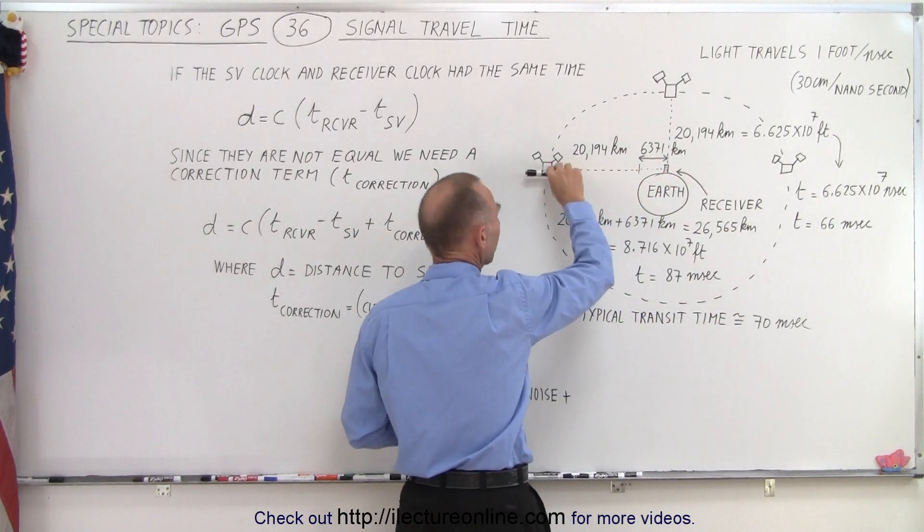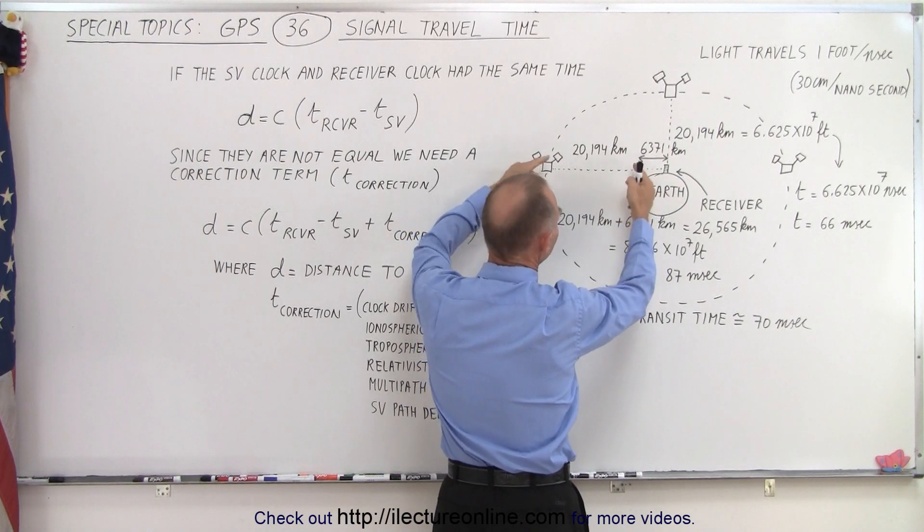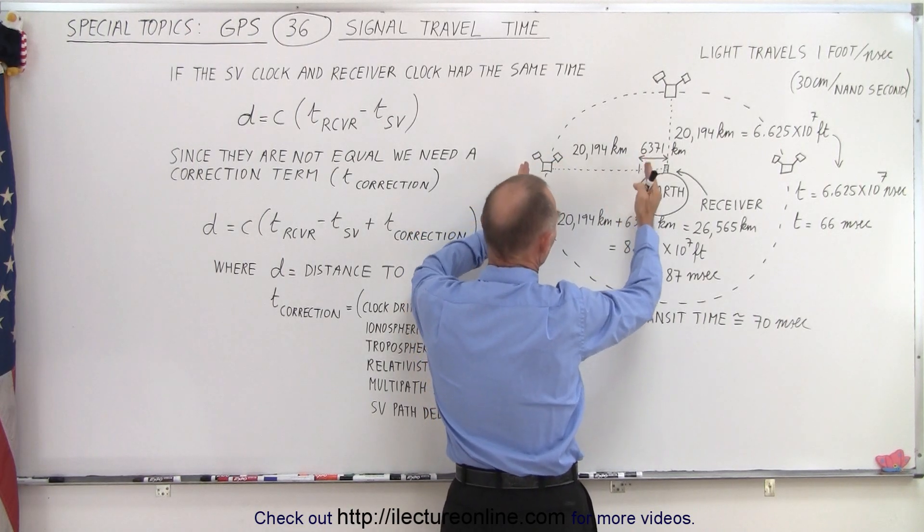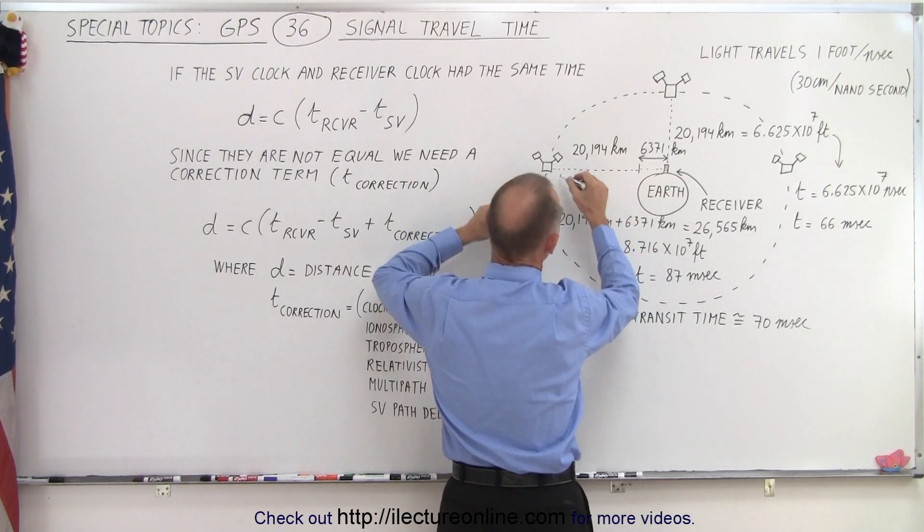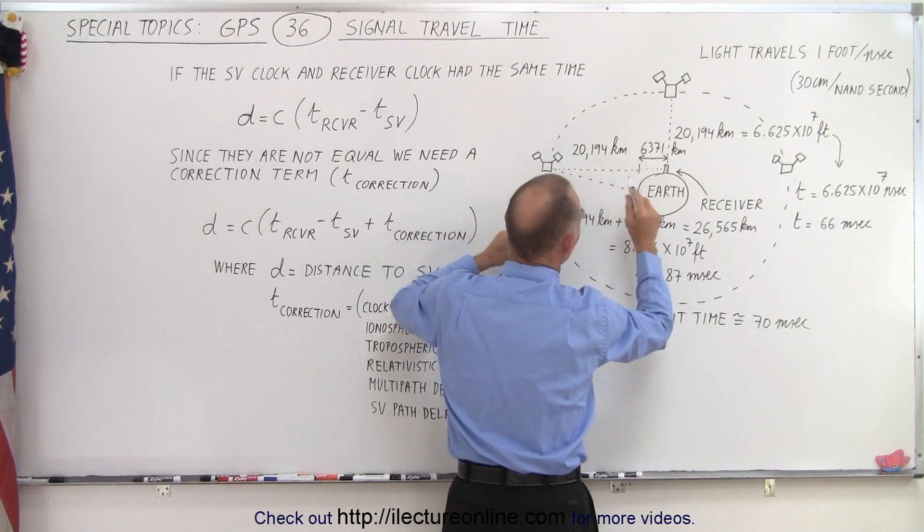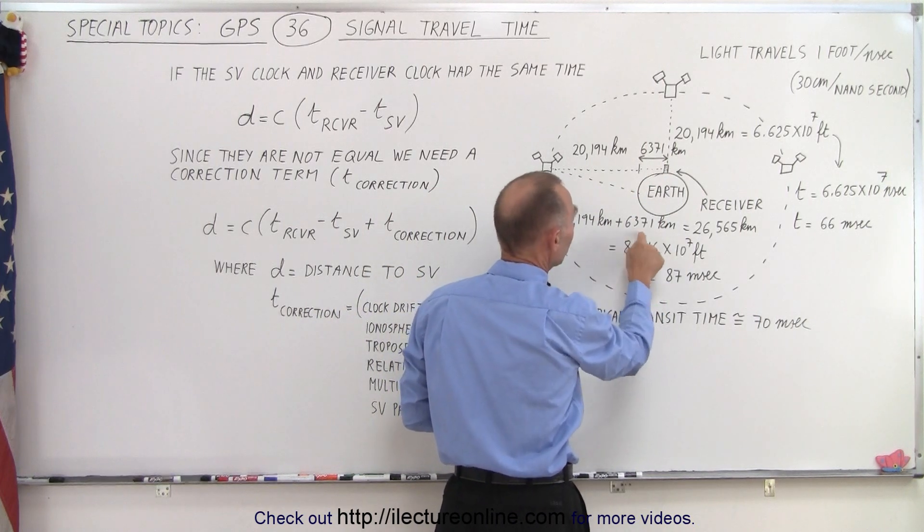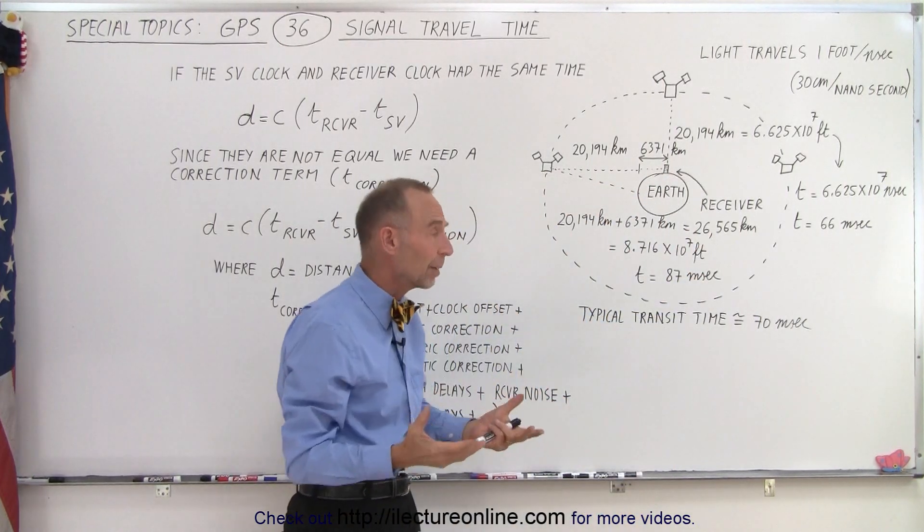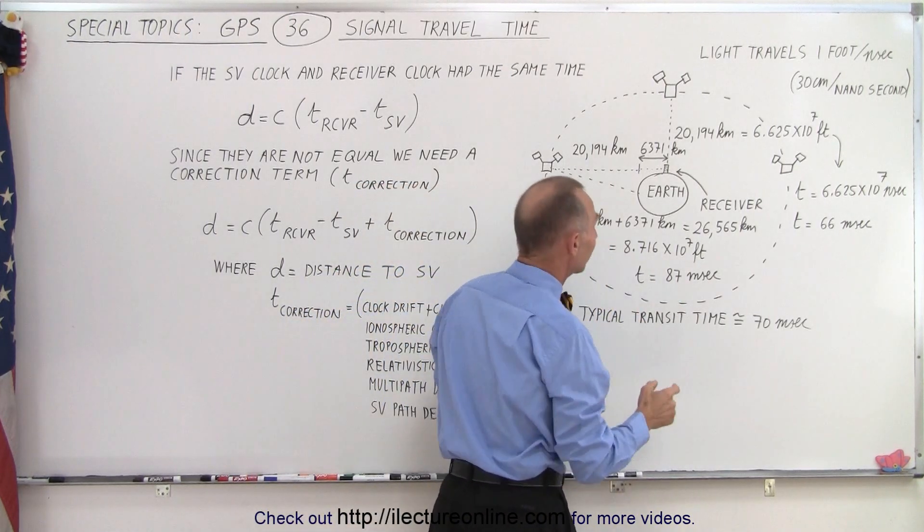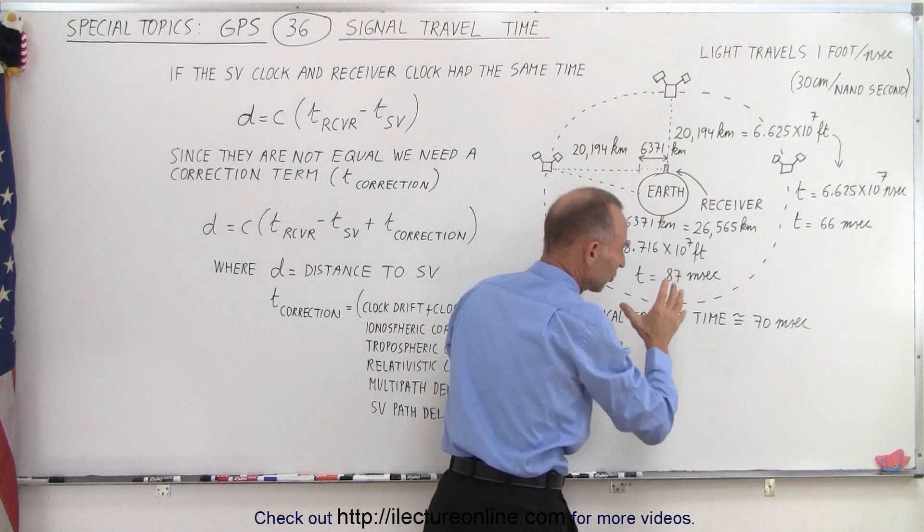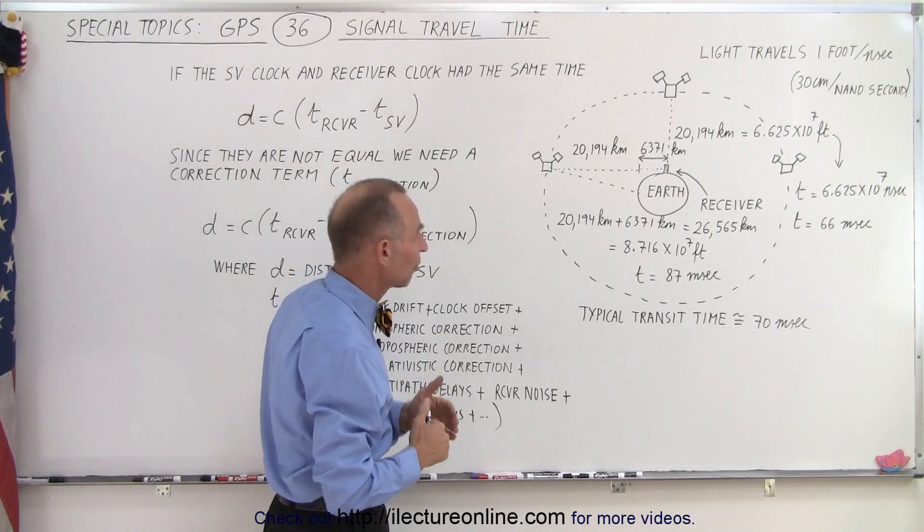Now if the SV is at the horizon, again we do a rough modeling because the distance from here to here would be actually a little bit less than 20,194 kilometers because it's on an orbit like this. We then add to that the radius of the earth. The total distance would then be 26,565 kilometers. That means 87 million feet or 87 milliseconds for the signal to travel from here to here. Actual will be probably a little bit less, more like 85 milliseconds because of the position of the satellite.